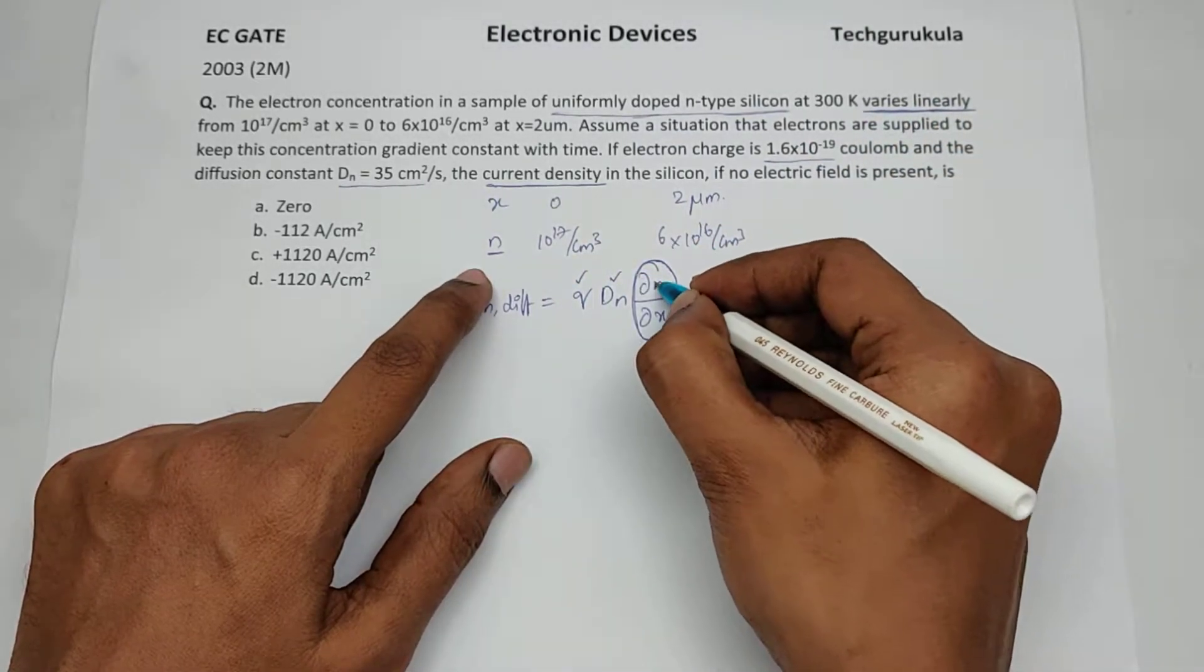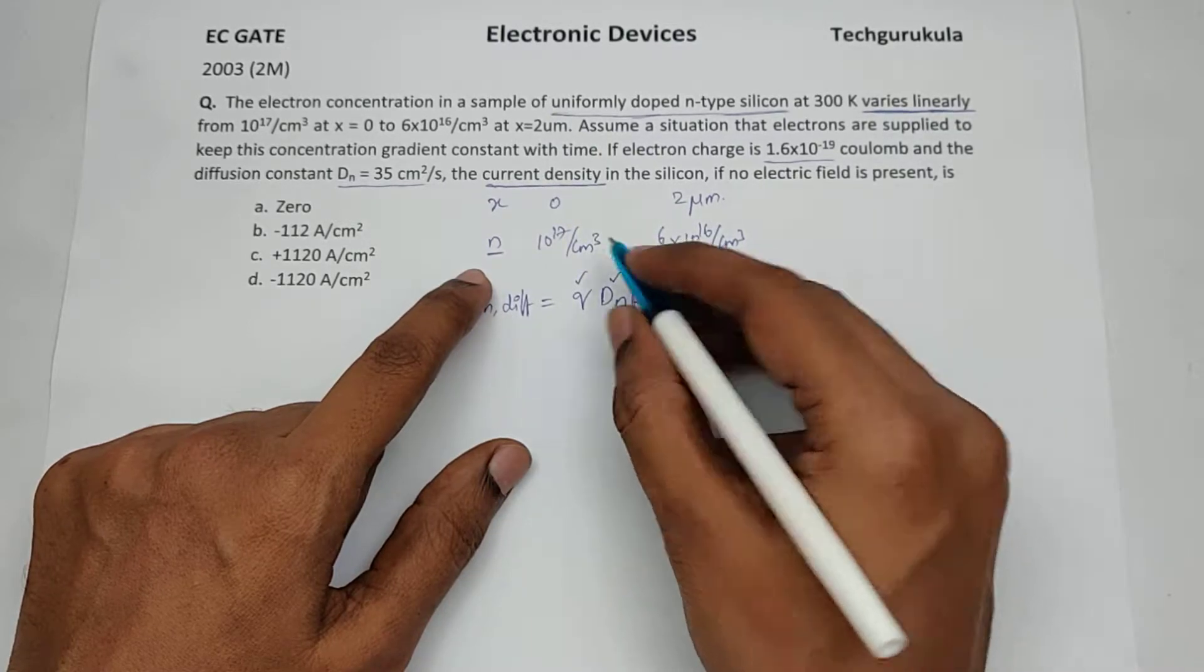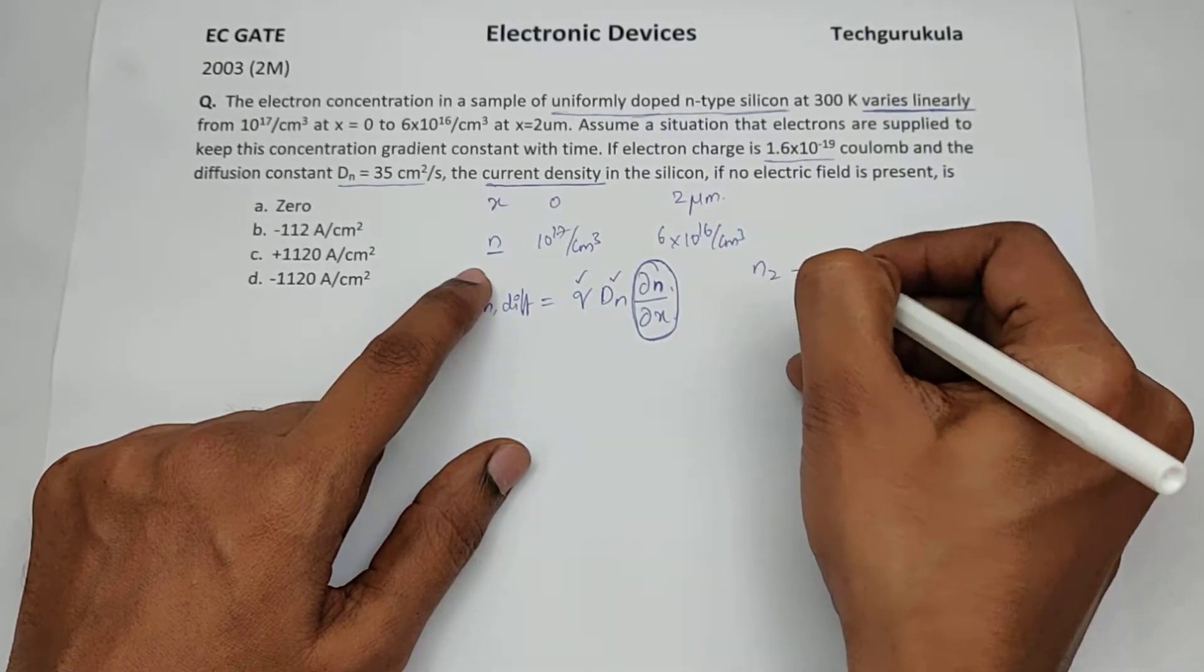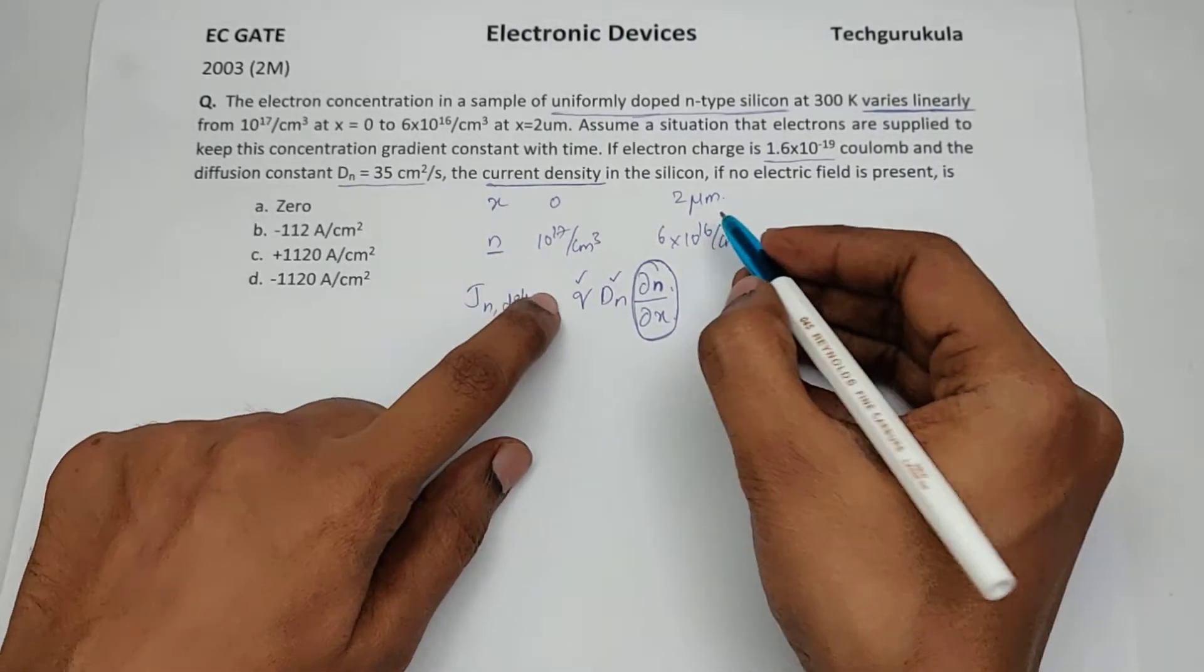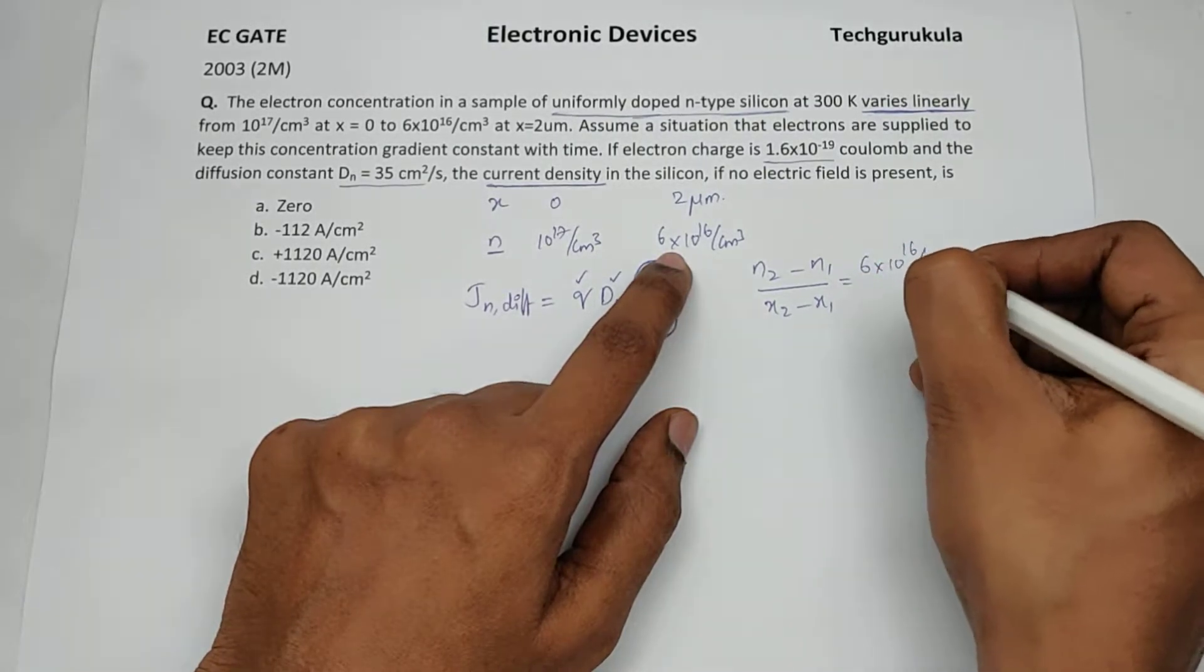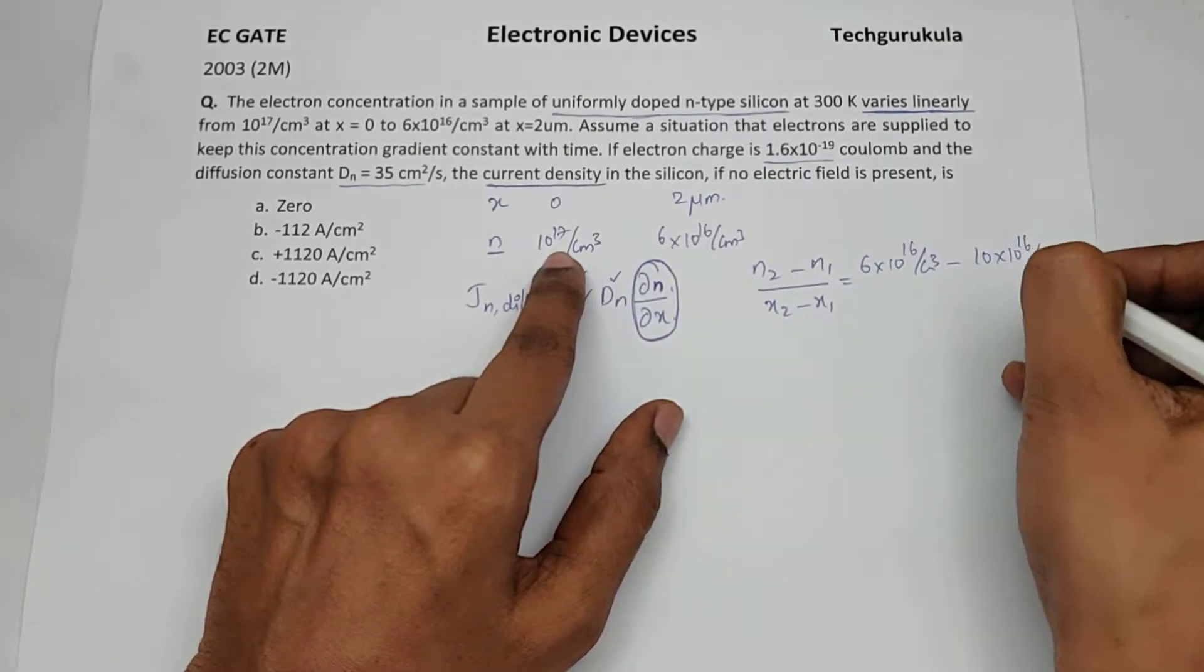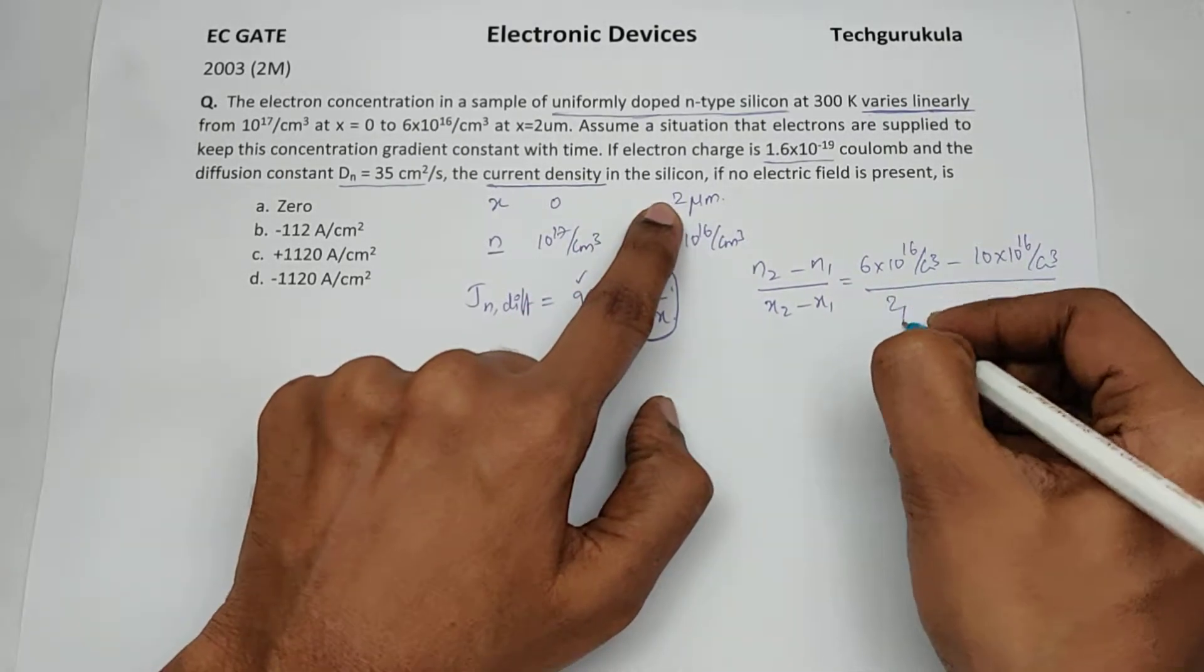This is nothing but finding the slope of carrier concentration change with respect to distance. If it is varying linearly, the slope is nothing but we can write n2 minus n1 over x2 minus x1. We can say n2 is 6 times 10^16 per cm³ minus n1 is 10^17, so I will write 10 times 10^16 per cm³.